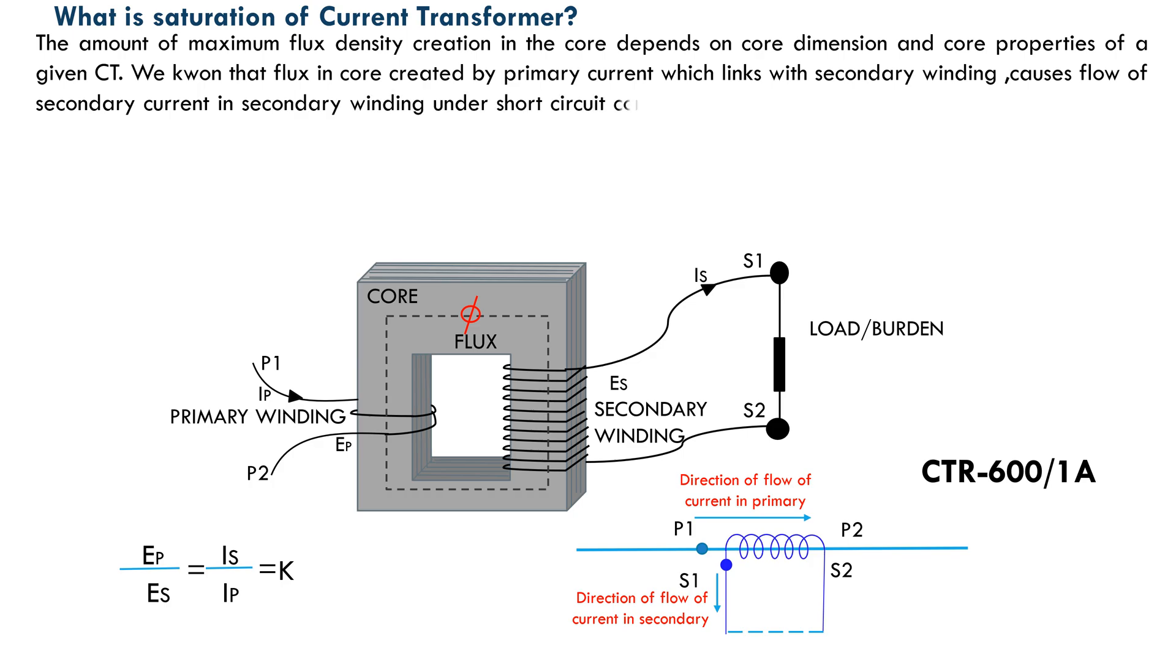As long as the flux density remains below what the maximum flux density is, a change in flux will create a ratio current flow in the secondary circuit.